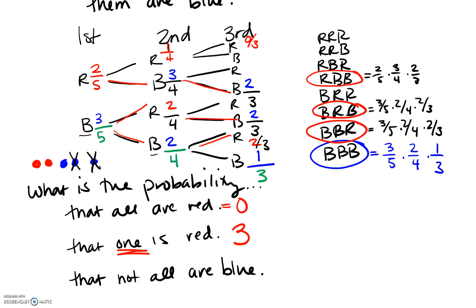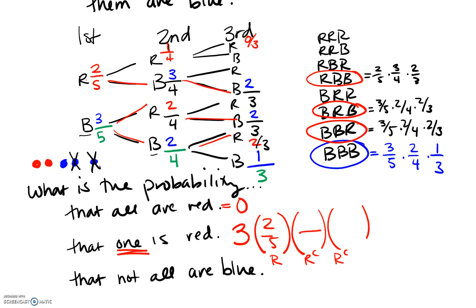What you could have done originally is just realize there were three different ways this could happen, and those probabilities all have to be the same because of the commutative property. So all you need to do is figure out one red first — that's two-fifths. The second can't be red so it's blue: three out of four. Then two out of three. You could do all of that instead of making the entire tree and calculating three separate probabilities.